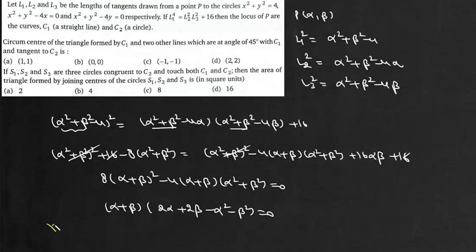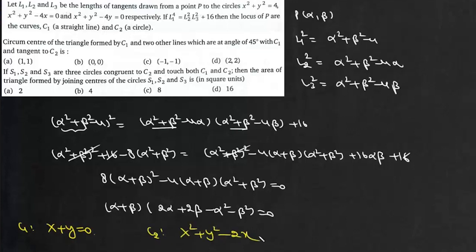So the required locus is either the straight line x + y = 0, which is curve C1, or the circle x² + y² − 2x − 2y = 0, which is curve C2.